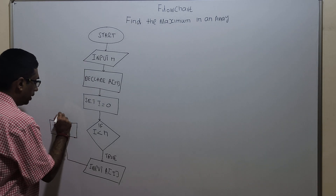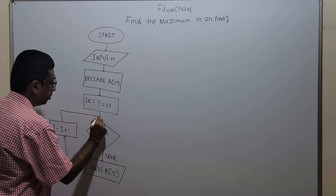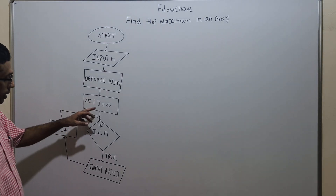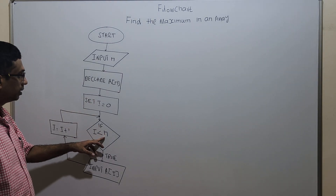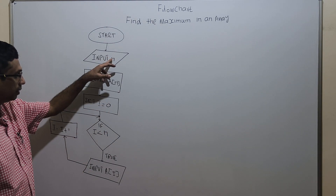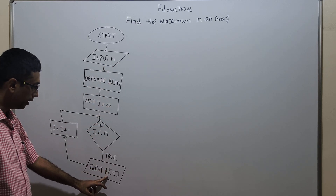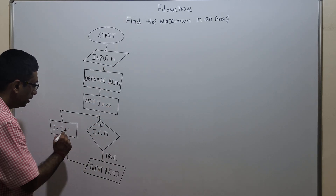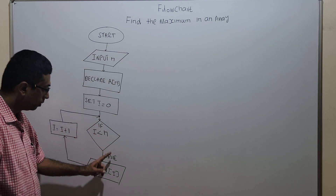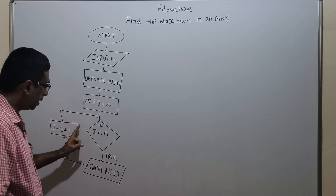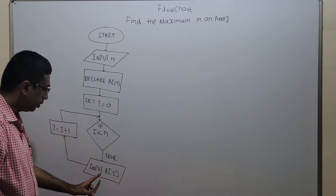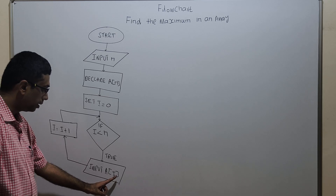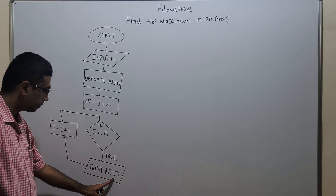I am connecting i back to the condition statement. So i starts at 0, checks i less than n, we obtain an input and increment i by 1. The loop goes continuously until i less than n is satisfied, storing array values from index 0 to n minus 1.